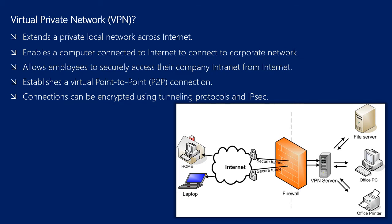A VPN basically extends your private network, which is usually your corporate local network, to a public network such as the internet. This means your remote and mobile users can connect to your corporate local network via VPN if they are connected to the internet. For example, a home employee or a user who often works outside of office premises can connect to your file server or other corporate resources via a VPN server. It is a virtual point-to-point (P2P) connection established between your remote users and the VPN server in your corporate network.